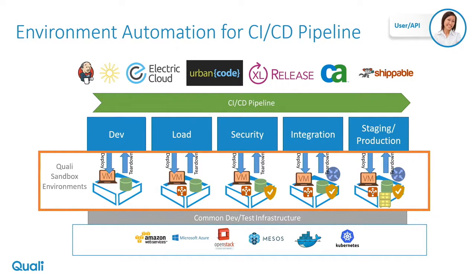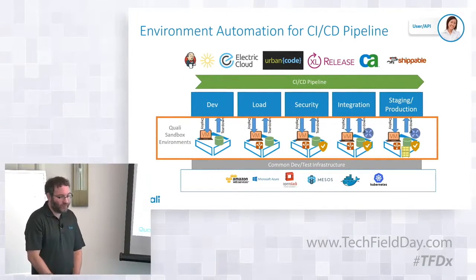Based on what our customers are doing with the product: spin up an environment for dev, then use those same environments as a single source of truth about how to spin a product environment all the way to staging and production. Running load tests on a more scaled-up version of the environment, running security tests on a more production-like environment to make sure you're testing the right things, testing various integrations, and finally getting a staging environment up.